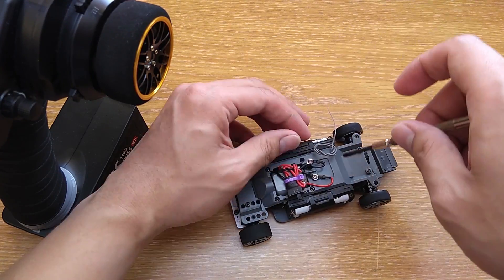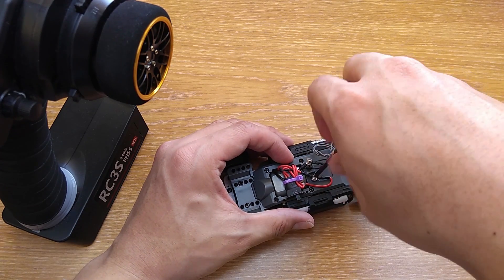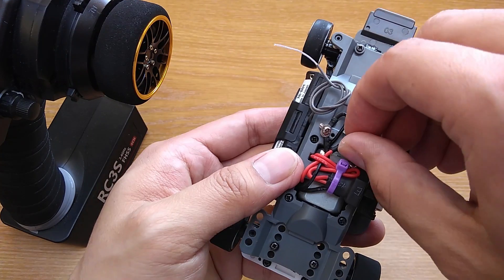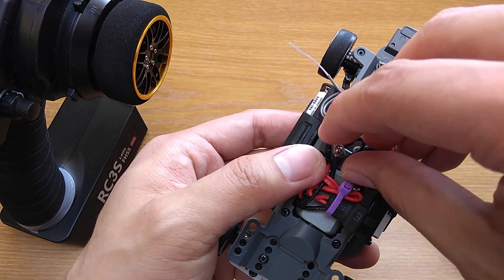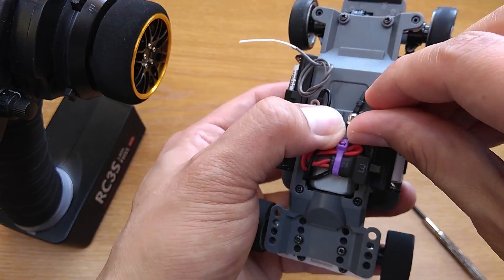Remember, check if the functionality is correct first, then the car direction later. If the ESC doesn't have brake, the forward function should be faster than reverse. And that's how you spot if you need to reverse channel 2 or throttle channel.